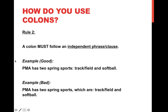For example, a good example: PMA has two spring sports, colon, track/field and softball. This colon works because the part that comes before it is independent — it could stand on its own. You could say 'PMA has two spring sports' and that would be a complete sentence. A bad example would be: PMA has two spring sports, which are, colon, track and field, and softball. This doesn't work because you can't use just the first part on its own — 'PMA has two spring sports, which are...' is not a complete sentence.